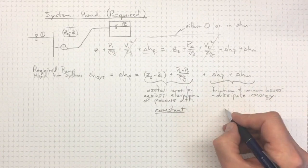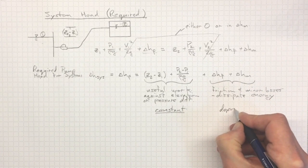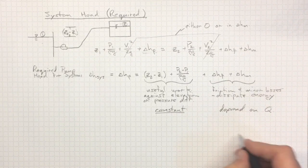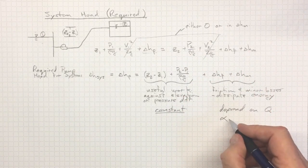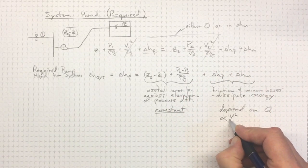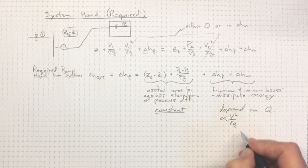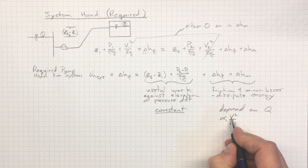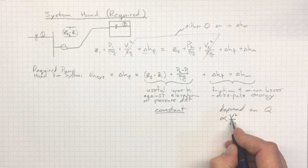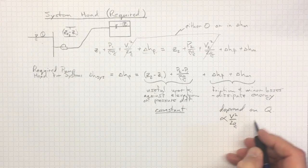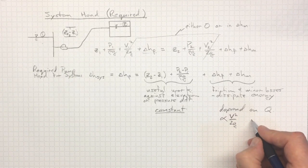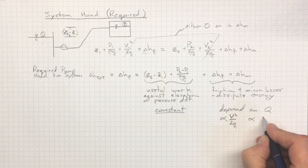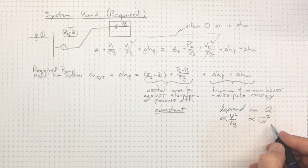On the other hand, we know that these losses depend on the flow rate. They depend on Q, and they're typically proportional. We've always got V squared over 2G in those loss terms. So, it depends on how fast the fluid is moving. F L over D plus sigma K V squared over 2G. And that velocity is proportional to the flow rate. So, our loss terms are going to be proportional to flow rate squared.